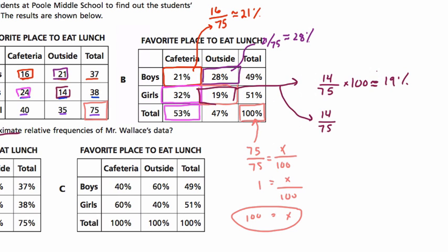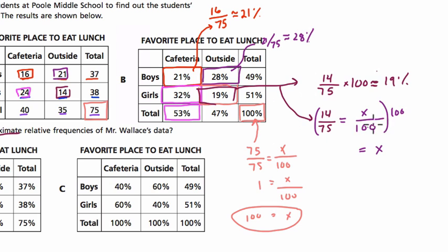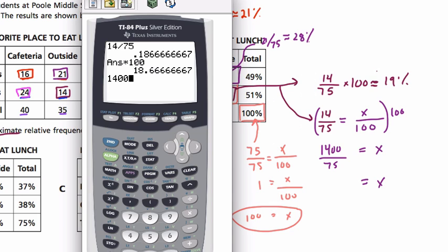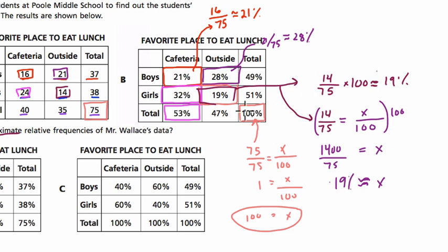Another strategy is setting up a proportion: 14 out of 75 equals x out of 100, since percents are out of 100. Solving for x — multiply both sides by 100 — gives us 14 times 100, or 1400, divided by 75. That's the same result: 18 and two-thirds, approximately 19%. So 19% of the total population are girls who prefer to go outside.